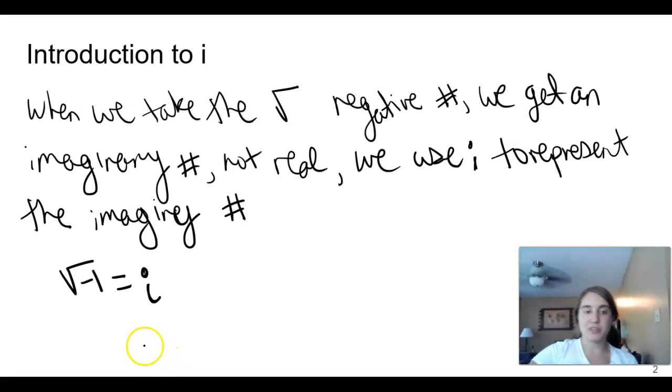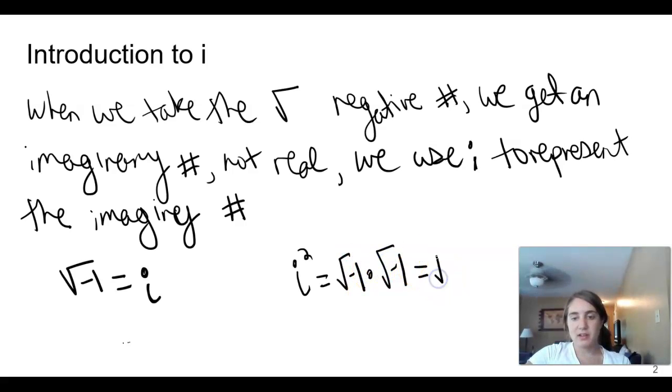So square root of negative 1 equals i. That's the main thing we want to remember so far. And with that, if we think about i squared, that means square root of negative 1 times square root of negative 1, that equals negative 1. So i equals square root of negative 1, i squared equals negative 1 are the big things that we want to remember.